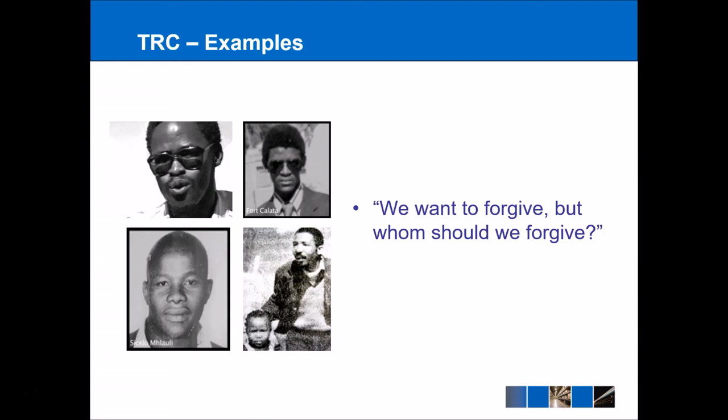One of the daughters of the victims came forward and was the youngest person to ever give evidence before the Truth and Reconciliation Commission. She gave the quote: 'We want to forgive, but whom should we forgive?' Archbishop Desmond Tutu argued that this was the key founding principle behind the Truth and Reconciliation Commission — this idea of wanting to forgive people, and being able to identify the perpetrators of crimes and therefore who people should actually be able to forgive.